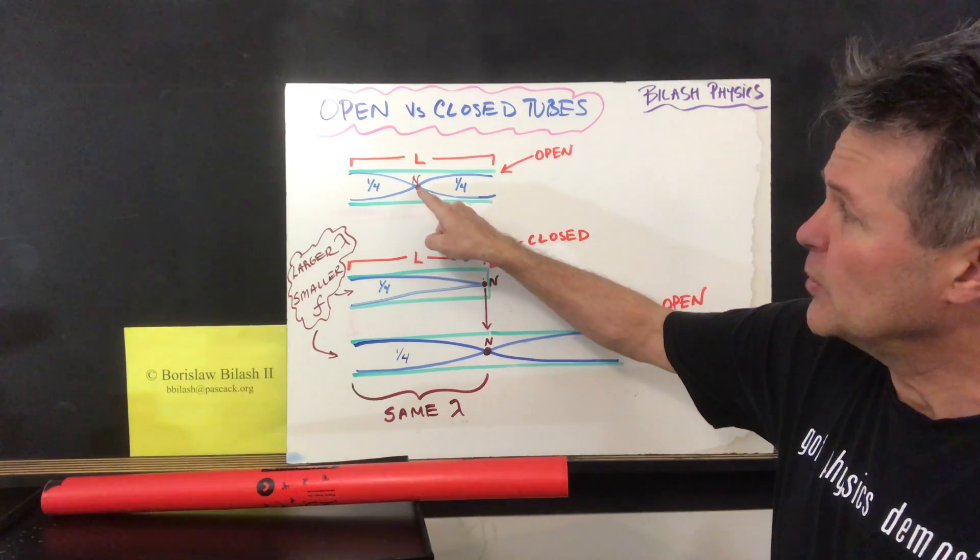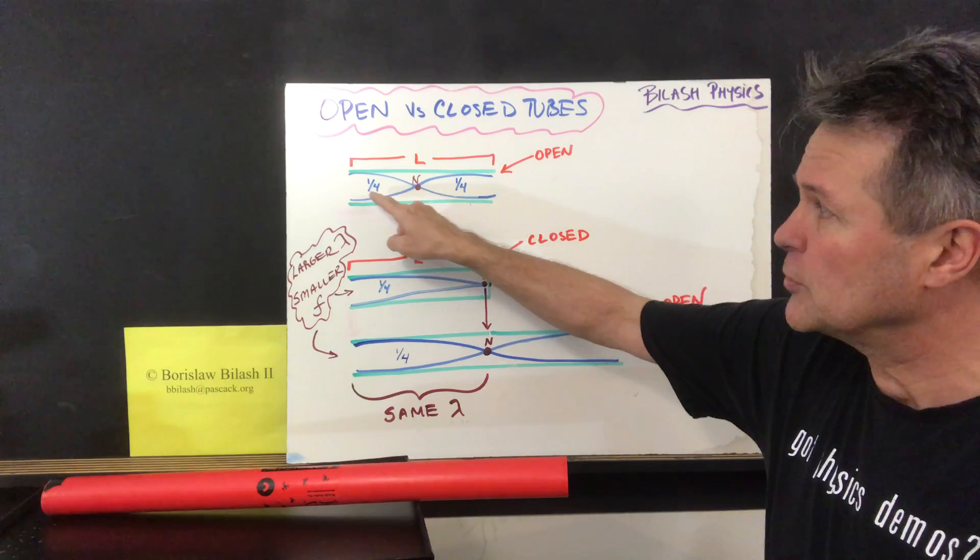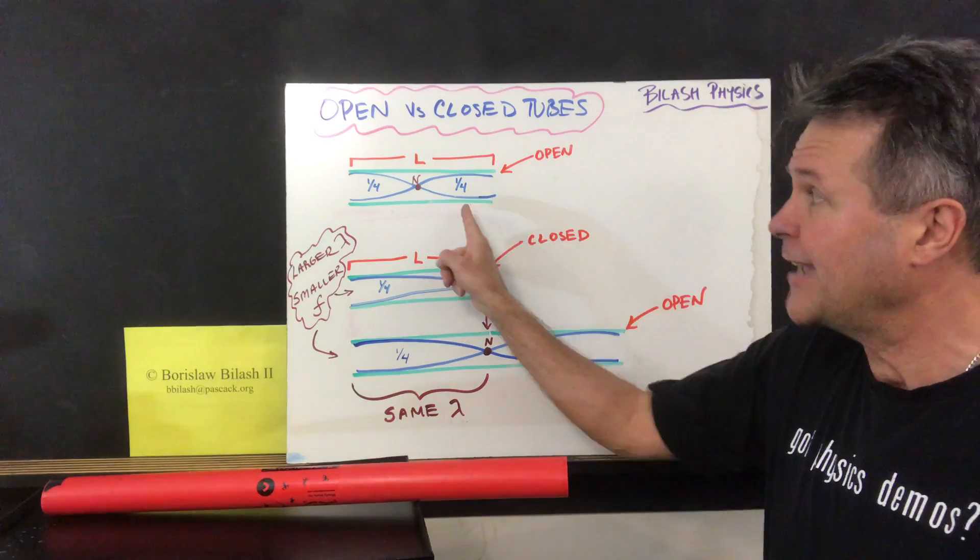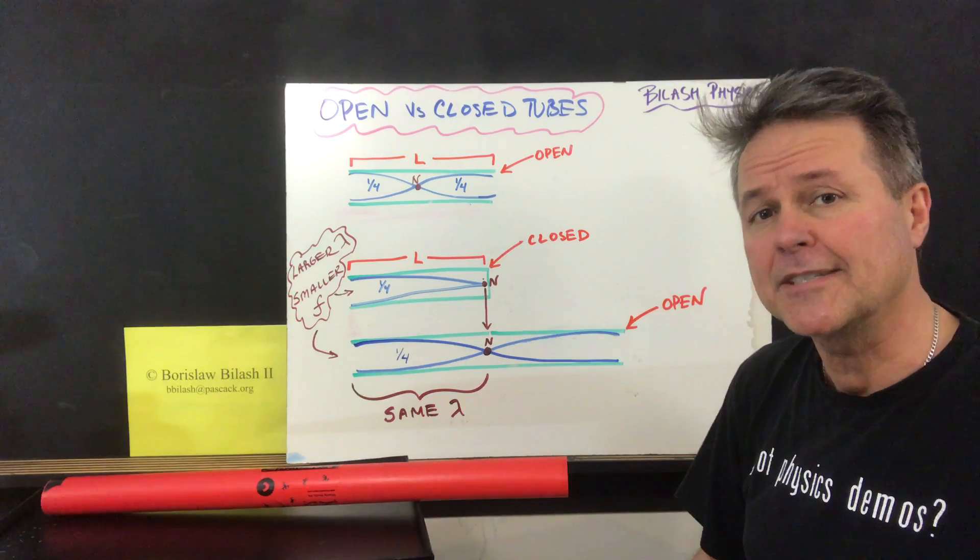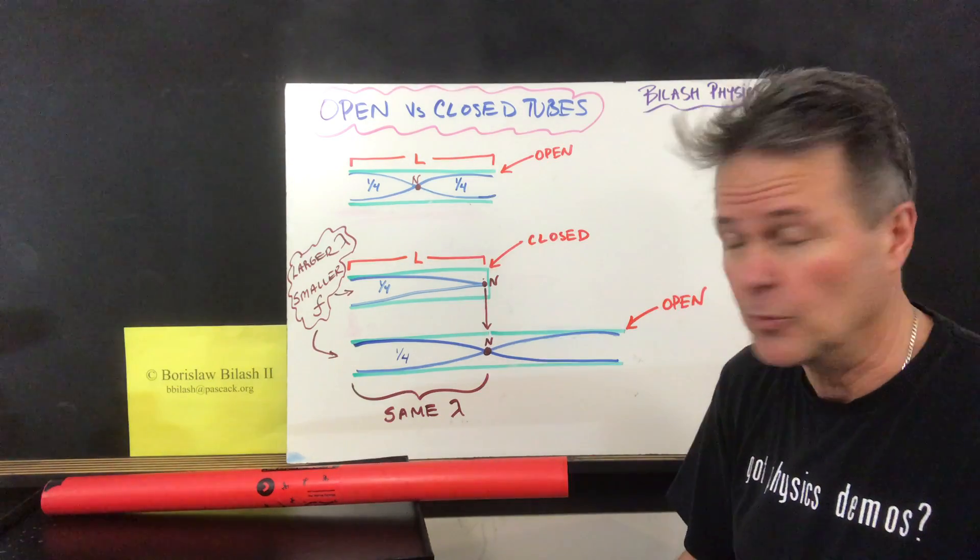In an open tube, we see that we have a node dead center in the tube, which means we have two quarter sections of a wave, which means half of a wave will fit inside that tube. In this case, half the wave is equal to the length of the tube.